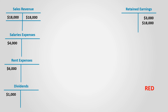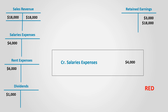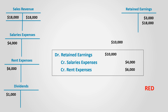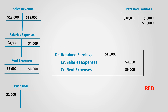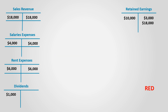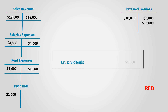To close expenses, salaries expense is credited by $4,000 and rent expense is credited by $6,000. Retained earnings decreases by the total of $10,000 since it is debited. After posting this entry, both expense account balances are equal to zero while retained earnings decreases by $10,000. To close dividends, its account is credited by its balance of $1,000 and retained earnings is debited by the same amount, so it decreases.